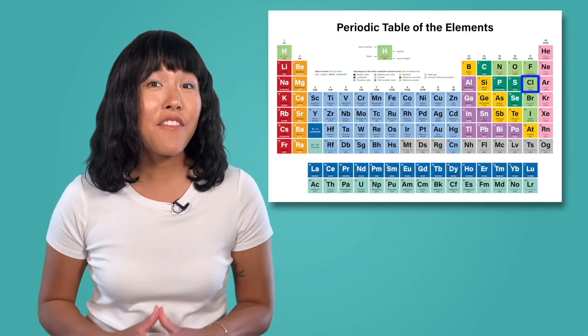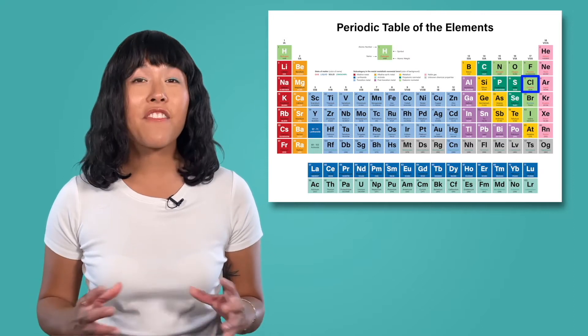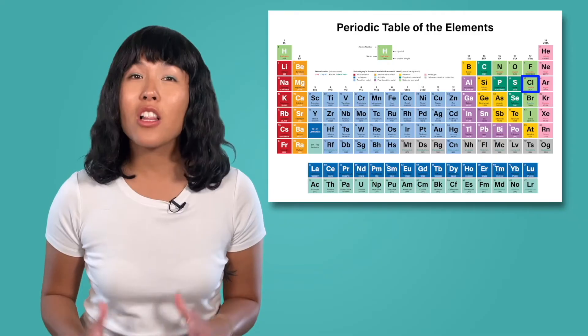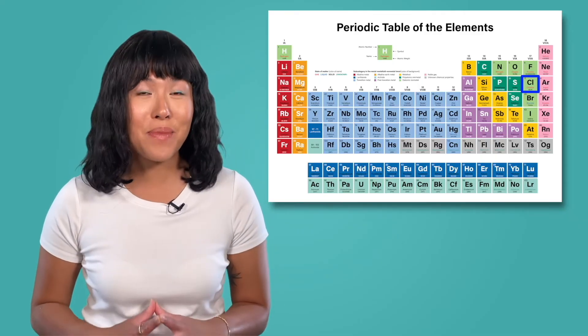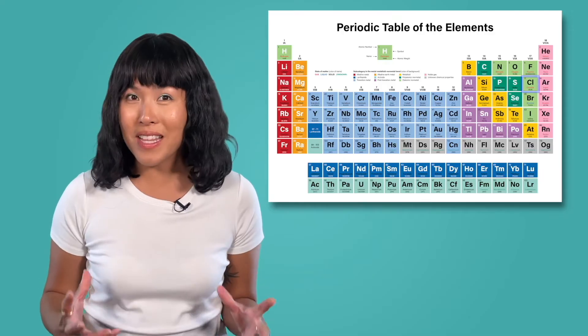Chlorine is in the seventh column and has seven valence electrons. When drawing valence electrons, we place the electrons one at a time clockwise around the element symbol until the fifth electron when we start pairing them up. Chlorine's Lewis dot structure should look like this.